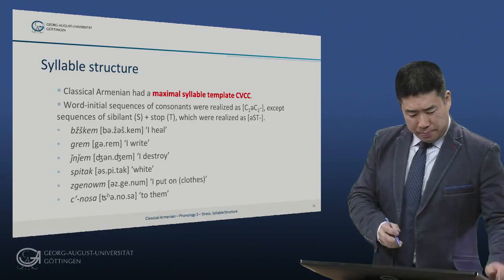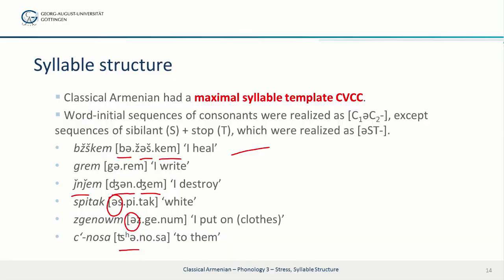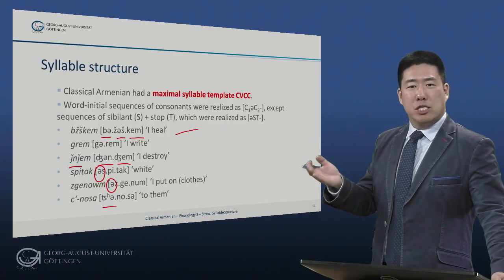Let's look at some examples. The verb 'I heal' with the formidable-looking cluster b-zh-sh-k seems to have been pronounced simply bzhshm — with three syllables. 'I write,' gerem, with a schwa. 'I destroy,' jinzhem — it looks scary, but once you put in a schwa, it's not so bad. With initial sp, we have espitak ('white'), where the schwa is put before the cluster. Similarly, izgenumm ('I dress myself'), zganum, with the schwa before the cluster zga. Finally, preposition plus pronoun: ts-no-sa, with schwa after the aspirated ts. So what looks very scary on paper is, as far as we can tell, not so scary in actual phonetic terms.